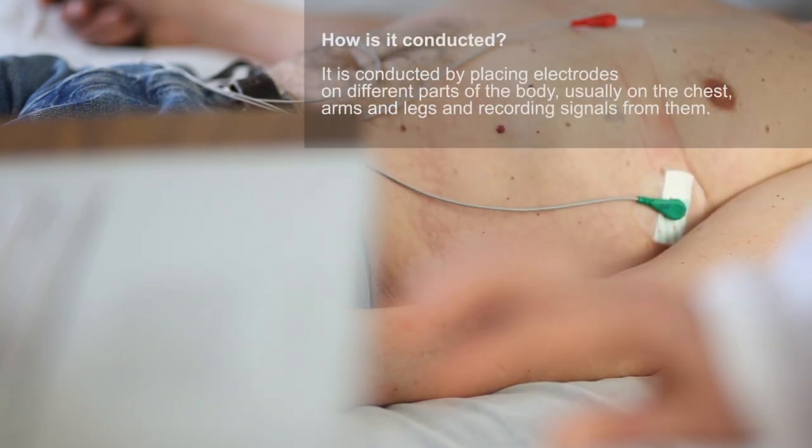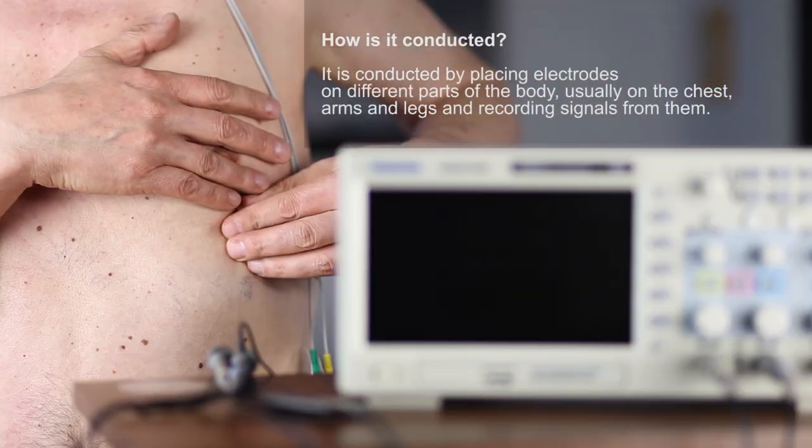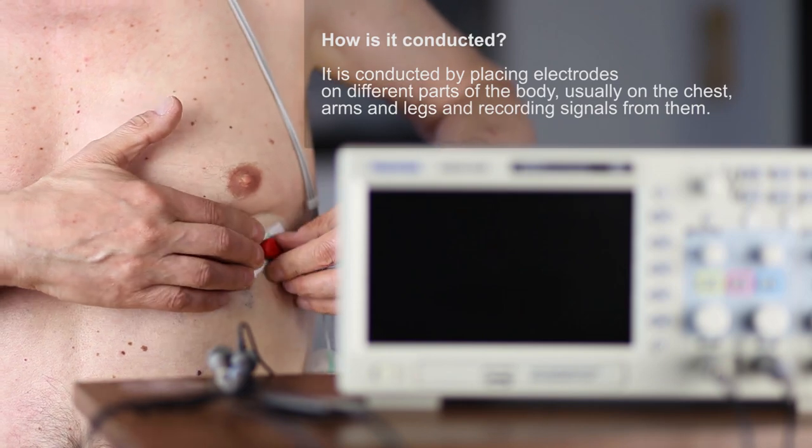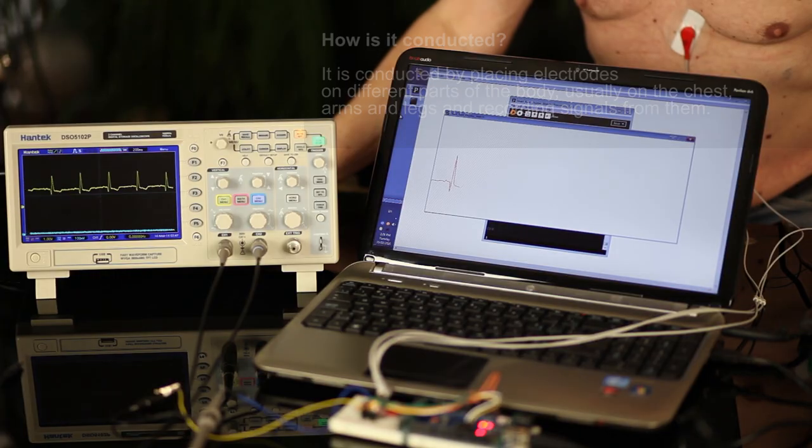How is it conducted? It is conducted by placing electrodes on different parts of the body, usually on the chest, arms and legs, and recording signals from them.